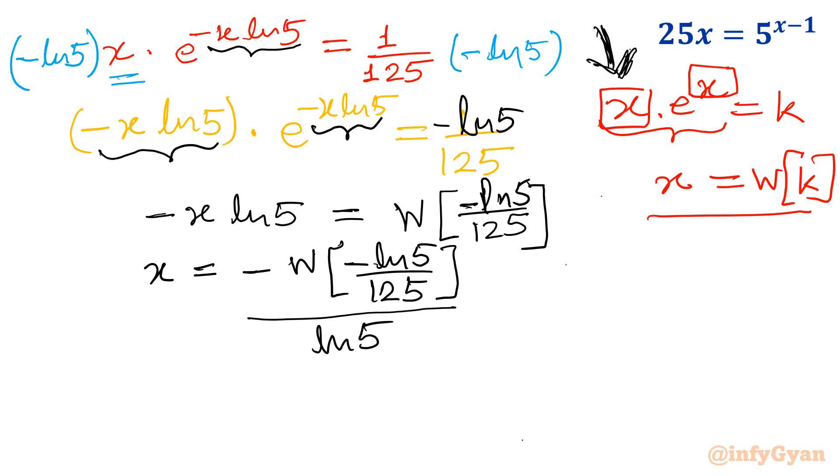Now if we will solve using graphs using Wolfram Alpha and Desmos also will cross check it. Then our answer, this value will come out x is equal to 0.008106 and so on. Now let us check its graph.